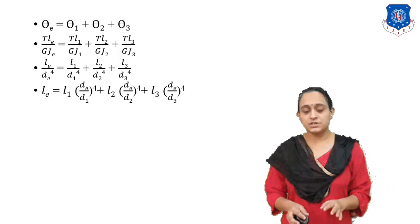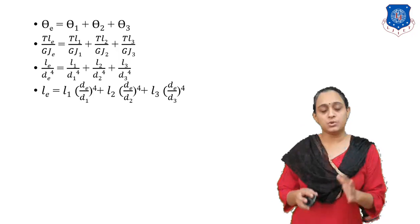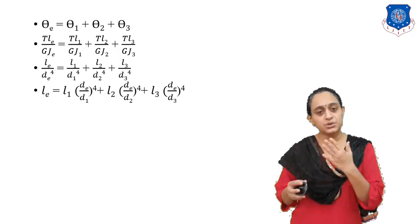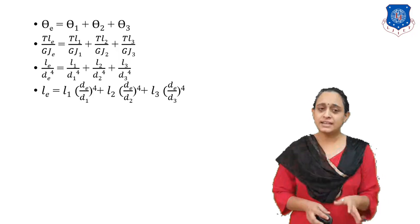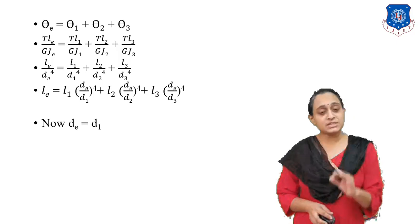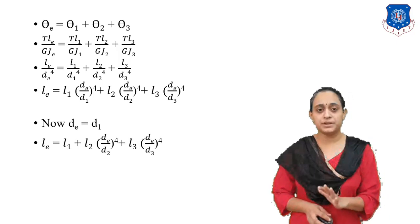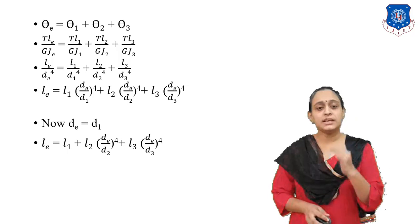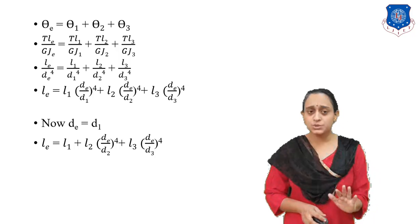Solving this equation gives: L_E equals L1 times (D_E by D1) raised to 4 plus L2 times (D_E by D2) raised to 4 plus L3 times (D_E by D3) raised to 4. Assuming D_equivalent equals D1, we get: L_E equals L1 plus L2 times (D_E by D2) raised to 4 plus L3 times (D_E by D3) raised to 4. This is the final equation of the equivalent shaft.